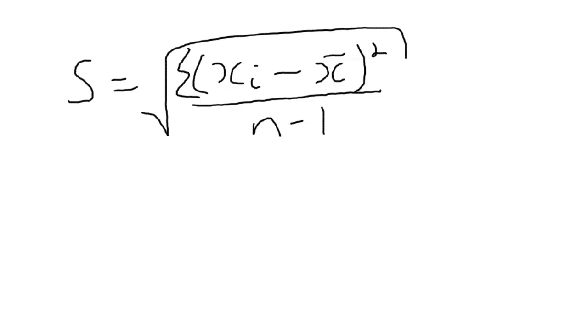If we were to square that value, then that gets rid of the root, in which case we have something called the variance.